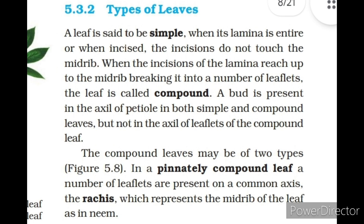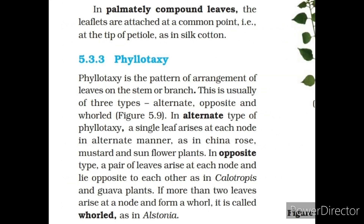Types of leaves. A leaf is said to be simple when its lamina is entire or when incised, the incisions do not touch the midrib. When the incisions of the lamina reach up to the midrib, breaking it into a number of leaflets, the leaf is called compound. A bud is present in the axil of the petiole in both simple and compound leaves, but not in the axil of leaflets of the compound leaf. The compound leaves may be of two types. In a pinnately compound leaf, a number of leaflets are present on a common axis called the rachis, which represents the midrib of the leaf, as in neem. In palmately compound leaves, the leaflets are attached at a common point, i.e., at the tip of the petiole, as in silk cotton.